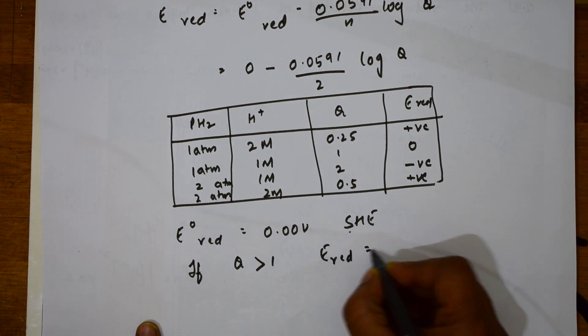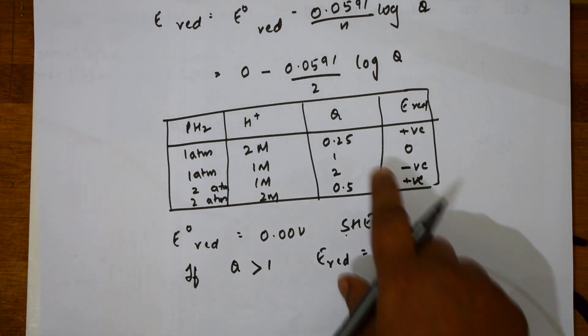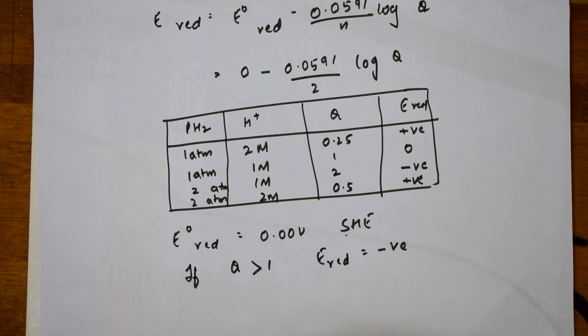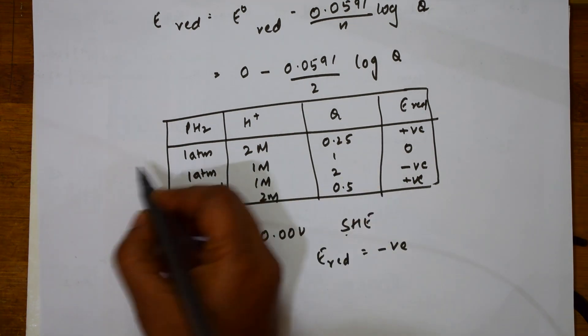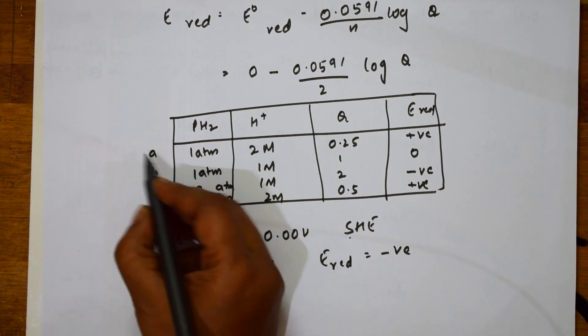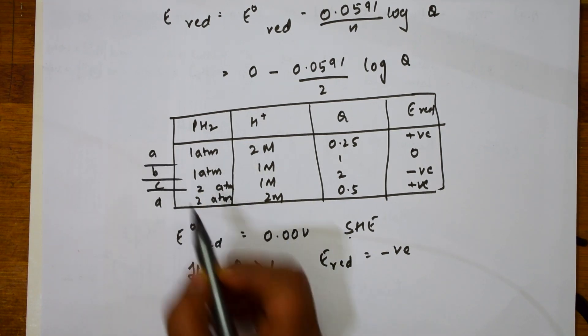If the Q value is greater than 1, so E reduction is negative. Let's see here. If it is greater than 1, it is negative. So what is the correct answer? Which one has this one? This is option A, option B, option C, and option D. So which one is negative?